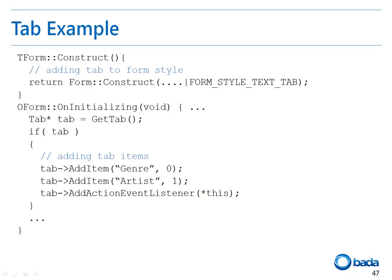Let's have a look at the actual source code. First, in the construct function of the form, I've enabled a text tab by adding the FORM_STYLE_TEXT_TAB flag to the form style. In the onInitializing function, I acquired the form's tab by calling the getTab function and then added items to the tab. The first parameter is the string to appear in the tab and the second parameter is the tab's action ID. To detect whether a tab has been pressed, the object has been added as an action event listener.